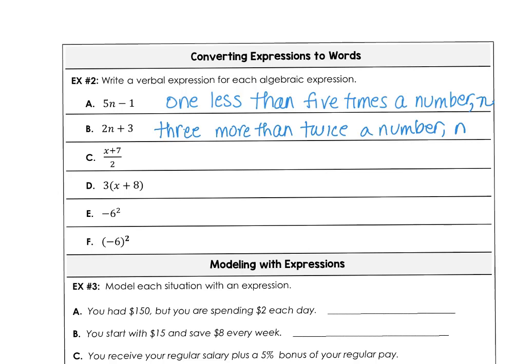In part C, it looks like we have x plus seven, so that quantity, and we're dividing by two. So I could say that this is half the sum of a number and seven. And if I wanted to say a number x and seven, I could do it that way.